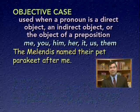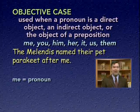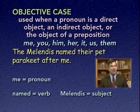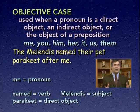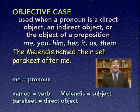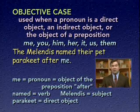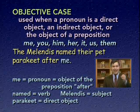'The Melendis named their pet parakeet after me.' The verb is named, the subject is the Melendis, and the direct object is parakeet. The pronoun me is the object of the preposition after — we have the prepositional phrase 'after me.' Because the pronoun is being used as the object of a preposition, it should be in the objective case, as it is. These three sentences illustrate the three uses of objective case pronouns: direct object, indirect object, and object of a preposition.